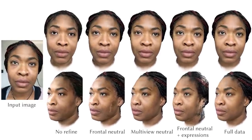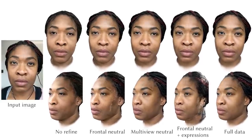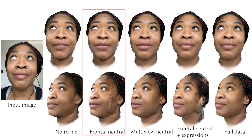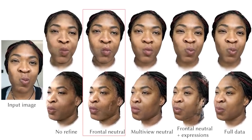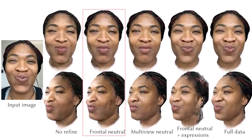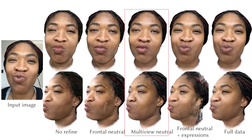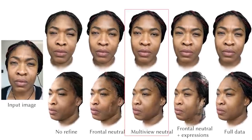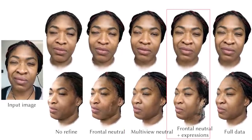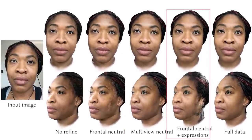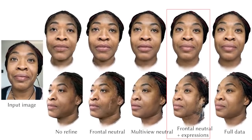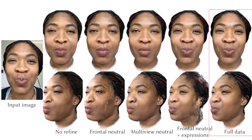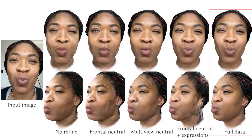We also evaluate the effects of different data used in our refinement process. As discussed, without any refinement, we fail to recover some details of the user's face. Using only frontal neutral data to refine the avatar model causes an overfitting problem, making the reconstructed expression even worse. Using multi-view neutral face data, we can get better looking side views, but the overfitting problem still exists for expressions. Using only frontal expression data helps better recover arbitrary expressions; however, the side views of the avatar cannot be recovered well. Only by combining the multi-view neutral data and expression data can we achieve good quality results across both different expressions and viewpoints.